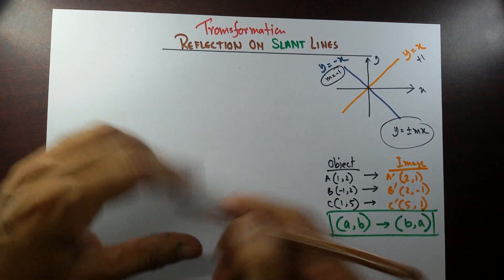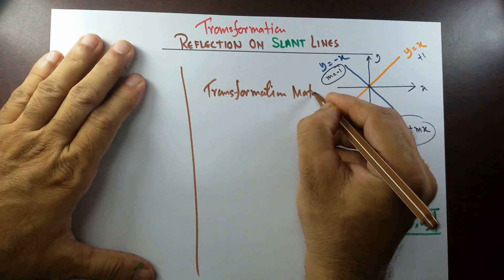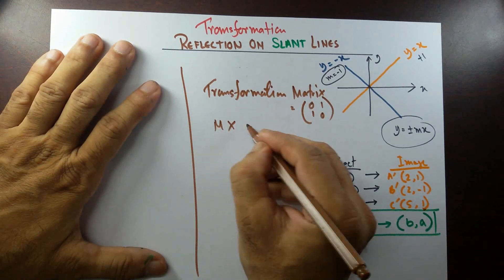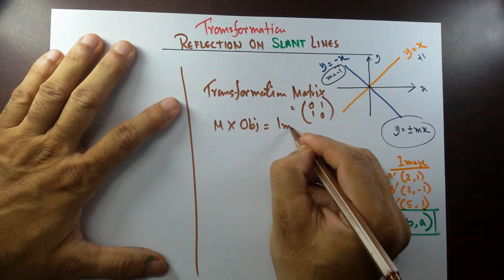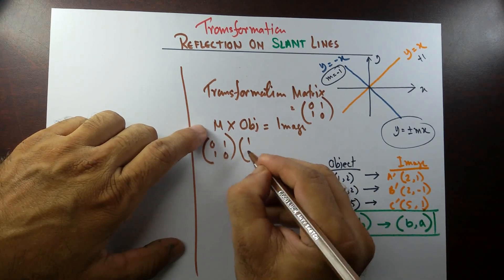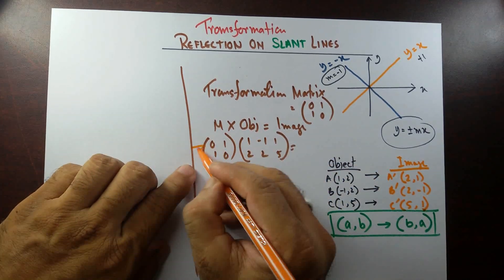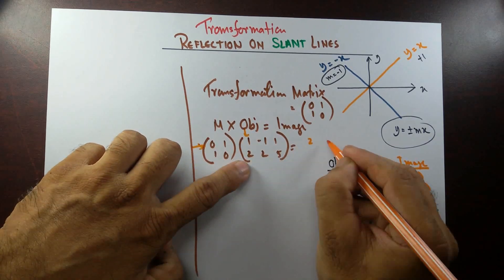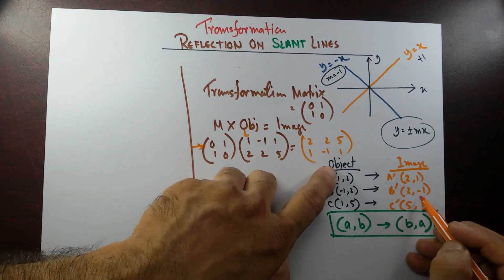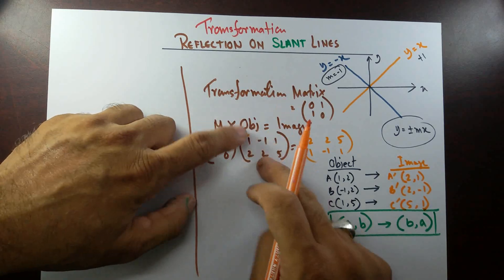What about the transformation matrix? The transformation matrix for reflection on y equal to x is [0, 1; 1, 0]. Remember, transformation matrix times object equals image. If we multiply [0, 1; 1, 0] with the object coordinates — (1, 2), (-1, 2), (1, 5) — the image becomes (2, 1), (2, -1), (5, 1). That confirms that multiplying the transformation matrix with the object gives us the correct image.